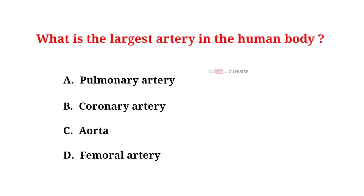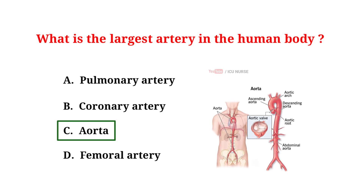What is the largest artery in the human body? A. Pulmonary artery. B. Coronary artery. C. Aorta. D. Femoral artery. And the correct answer is C. Aorta. The largest artery in the human body is the aorta. It originates from the left ventricle of the heart and distributes oxygen-rich blood to all parts of the body through its extensive network of branches.